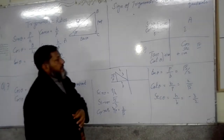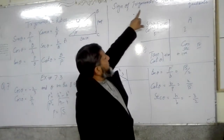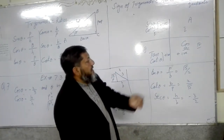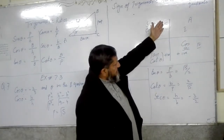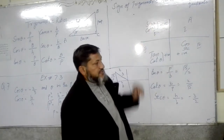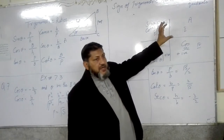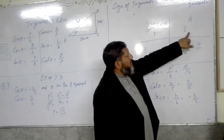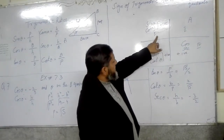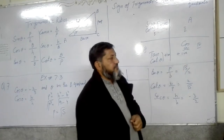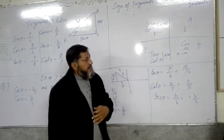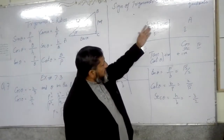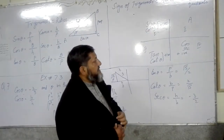Now we look at the signs of trigonometric ratios in different quadrantal forms. Using the x-axis and y-axis on a graph in trigonometric form, we have four quadrants: first, second, third, and fourth. Some trigonometric functions are negative in different quadrants and some are positive.